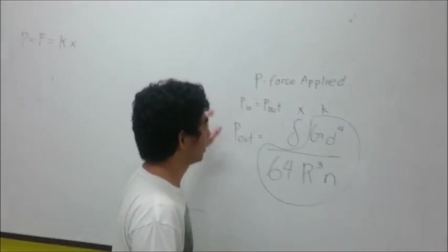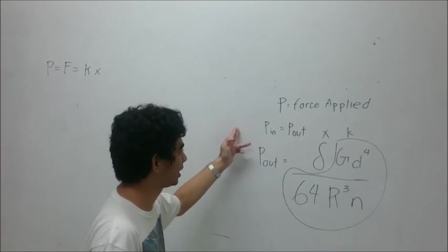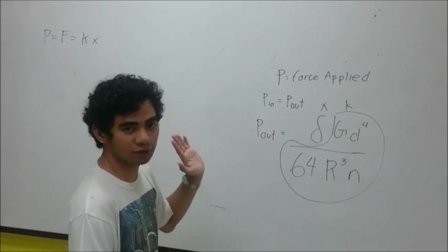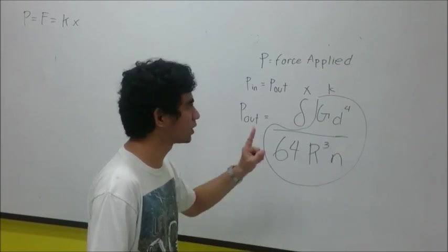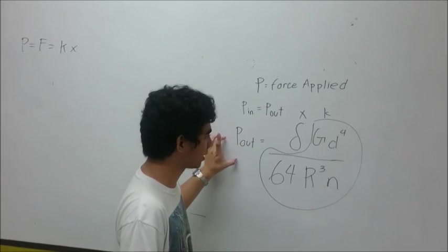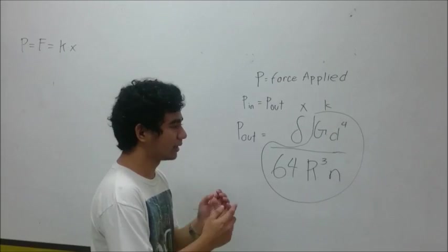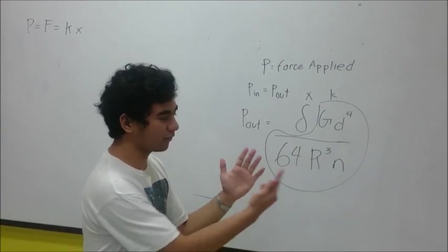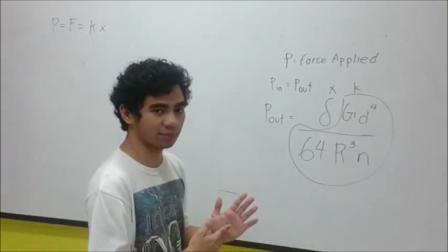Isolating the force applied, we can equate it to force in equals force out. Then, transposing all the values from the equation of deformation, we get that the force is equal to the deformation times the shear modulus times the diameter of the spring to the fourth power times 64 over the radius cubed of the spring and times the number of rotations in the spring.